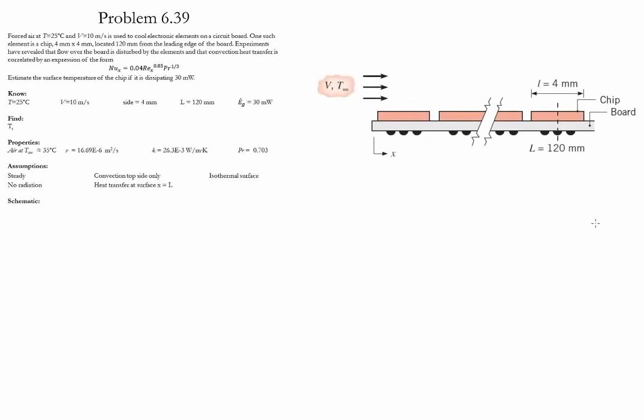Problem 6.39. In this problem we have electronic elements in a circuit board which are cooled by forced air at 25 Celsius with a velocity of 10 meters per second.